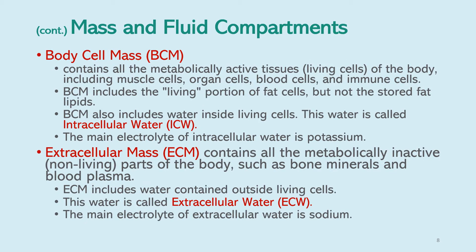Body cell mass contains all the metabolically active tissues or living cells of the body, including muscle cells, organ cells, body cells, and immune cells. It includes the living portions of fat cells but not the stored fat lipids. Body cell mass also includes water inside living cells, called intracellular water. The main electrolyte of intracellular water is potassium.